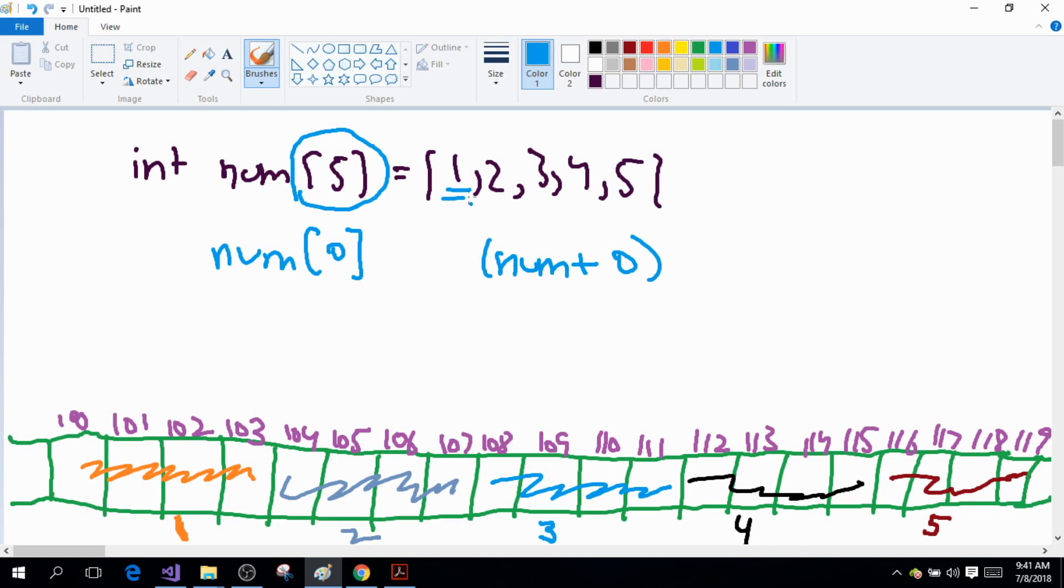When you add zero to it, it still remains the same address. And then in the end you dereference it. So this is equal to this right here, and this will give me the value at the address of the first element of the array.